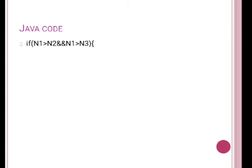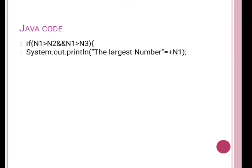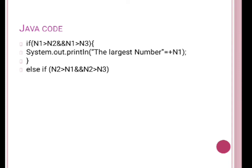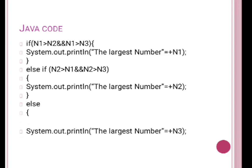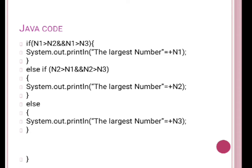Now apply the same conditions: if n1 is greater than n2 AND n1 is greater than n3, using the logical AND operator, then the largest number is n1. Else-if n2 is greater than n1 AND n2 is greater than n3, then n2 is the largest. And in the last case, if both conditions fail, the final answer is n3.